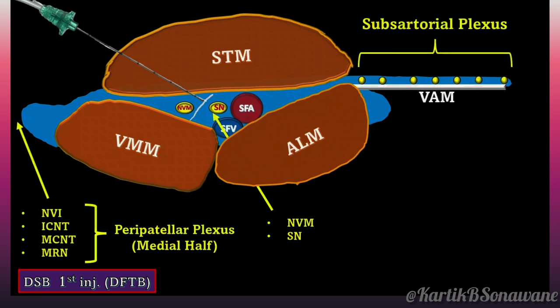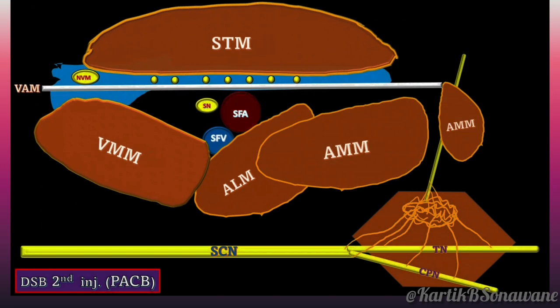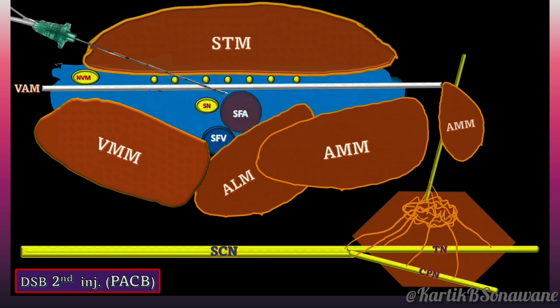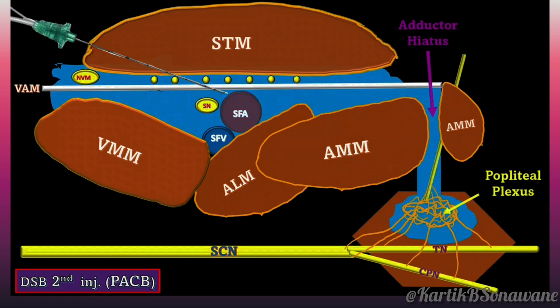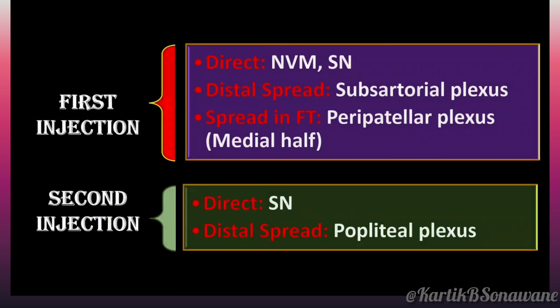During the second injection of DSB, the spread pattern of the first injection can be visualized under ultrasound. The remaining volume of the adductor canal is predominantly filled by delivering LA paravascularly beneath the VAM. Any excess volume subsequently passes through the adductor hiatus, extending into the popliteal region to involve the popliteal plexus. Therefore, the combined effect of both injections can effectively target all necessary procedure-specific innervations when administered in the correct sequence and volumes.